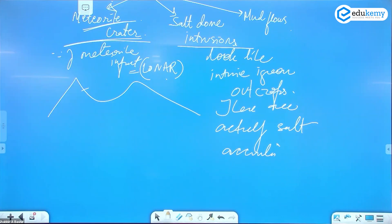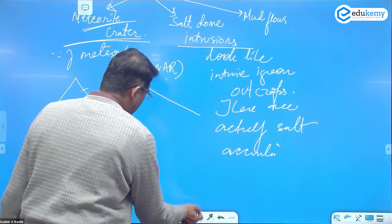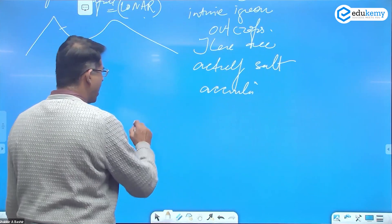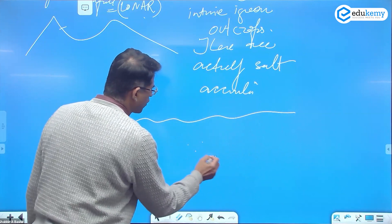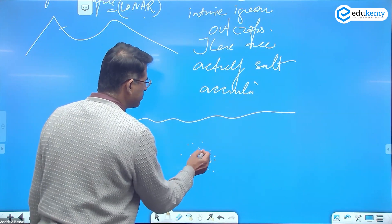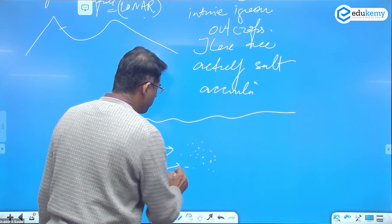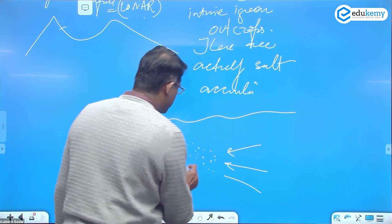Now salt dome intrusions, these look like intrusive igneous outcrops. These are actually salt accumulations pushed outwards because of strong hydrostatic pressures. So what's the mechanism, I do not know much on this. So there's land here.